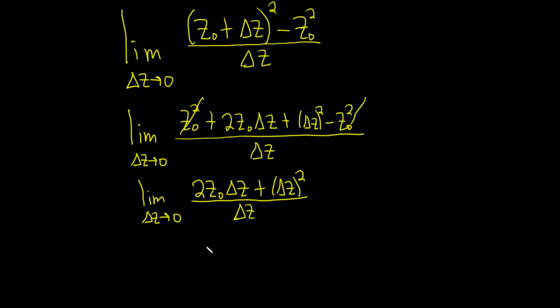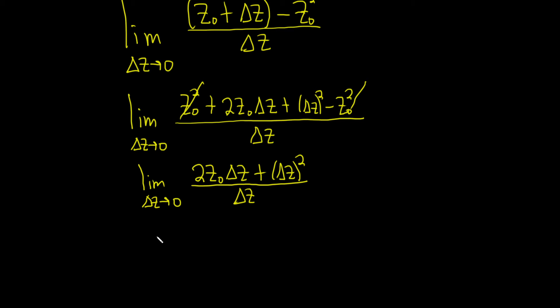And it looks like we can factor out a delta z in the numerator, so let's go ahead and do that. This is the limit as delta z approaches 0. So pulling out the delta z up top, let's see, we'll have 2z0 plus delta z.